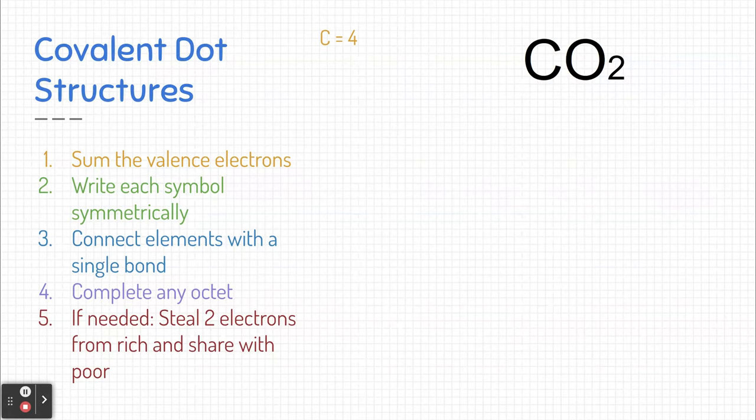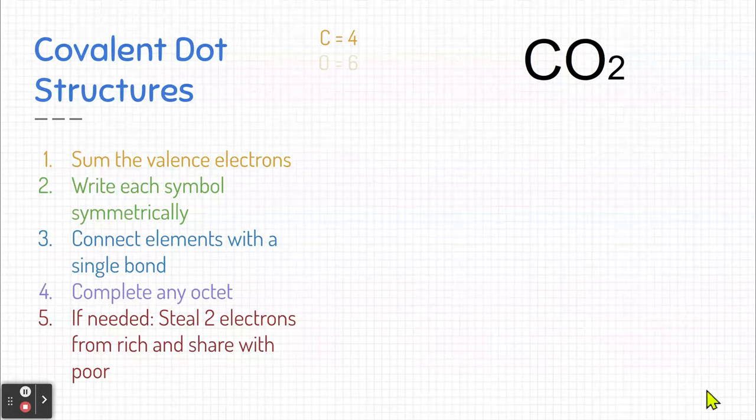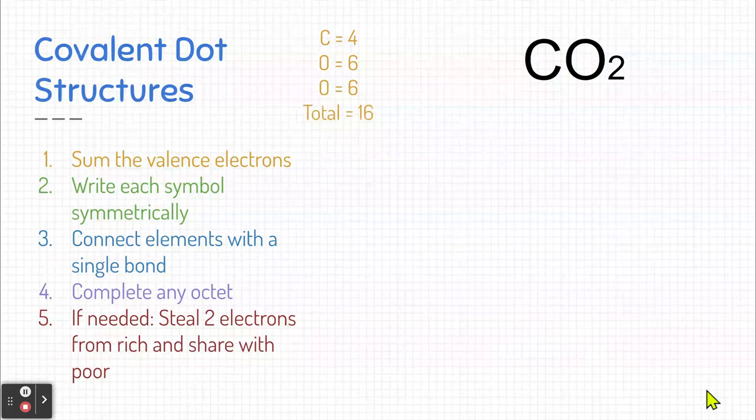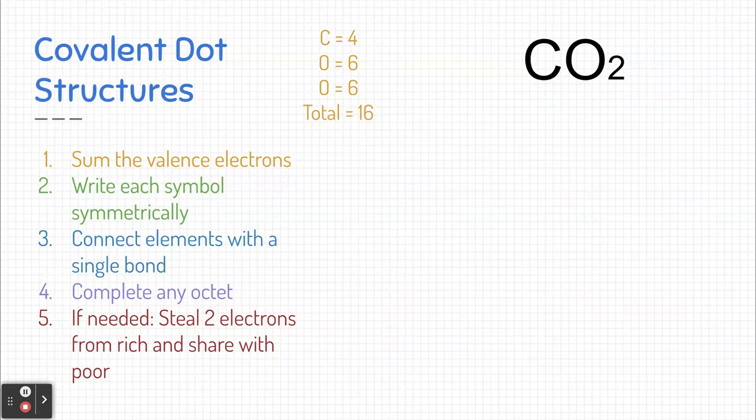Let's start with carbon. Carbon on the periodic table is in the 14th column, it's four elements over from the side, so it has four valence electrons. Oxygen has six valence electrons, but we need to remember we have two oxygens, so I'm going to need to add another six. If I add all of those valence electrons up, I have a total of 16 valence electrons to work with.